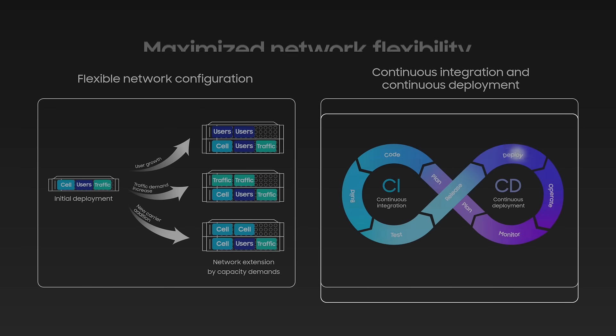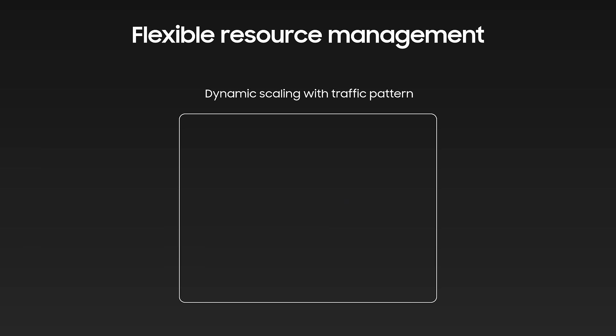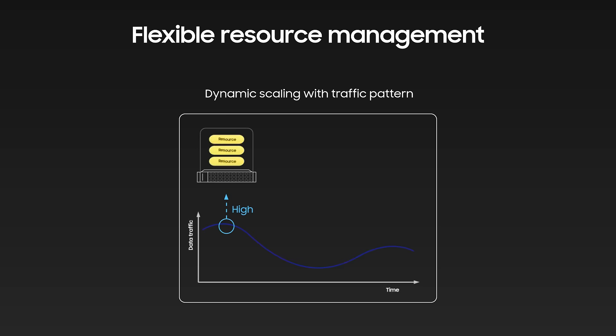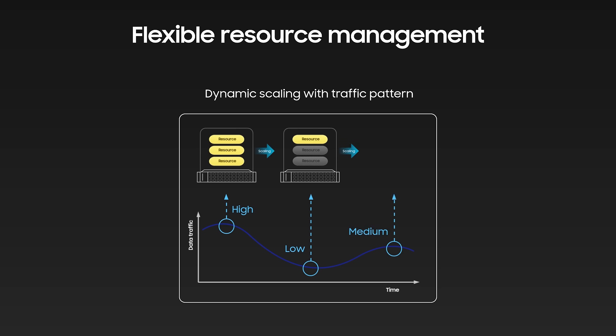V-RAN enables dynamic scaling, as virtualized components can be calibrated as needed, automatically modifying processing power, memory, and connection resources to meet unexpected traffic loads. When spikes in traffic occur, the centralized network can adapt on the fly without manual intervention and direct more resources to the cells with data peaks. During off-peak hours, the same resources can be assigned to support tasks like network analysis and reports, or put in power saving mode.